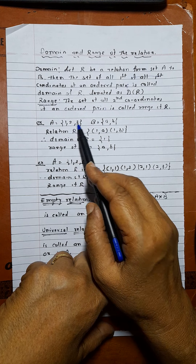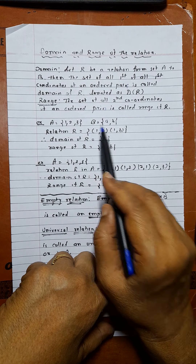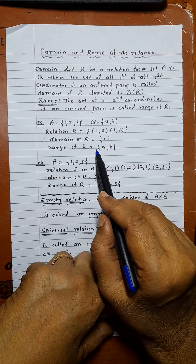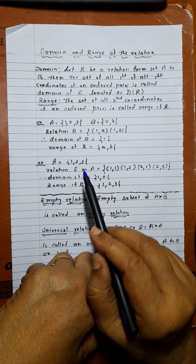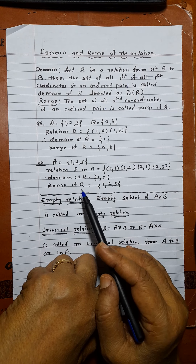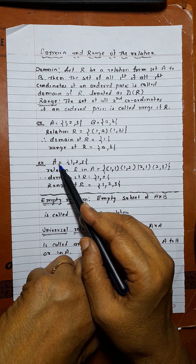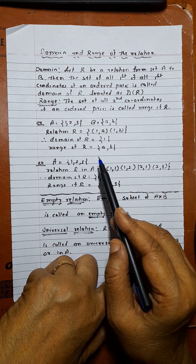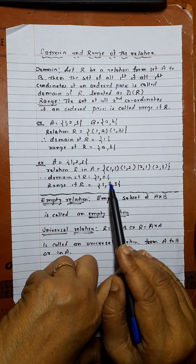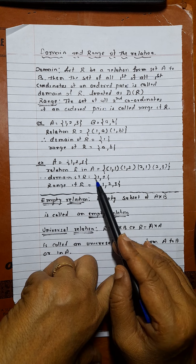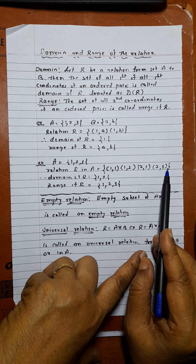For example, taking sets A and B with relation R as a subset of A cross B: the set of all first elements gives the domain. If a first element is repeated, we write it only once in the set, so the domain might be just {1}. The range is the set of second elements. For a relation R in a single set A equals {1, 2, 3}, a chosen relation gives domain {1, 2} and range {1, 2, 3}.